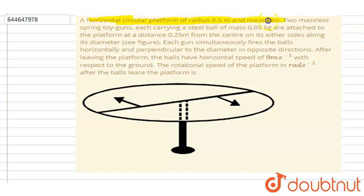...of radius 0.5 m and mass 2 kg. Massless spring toy guns carrying a steel ball of mass 0.05 kg are attached to the platform at a distance of 0.25 m from the center on either side along the diameter. Each gun simultaneously...